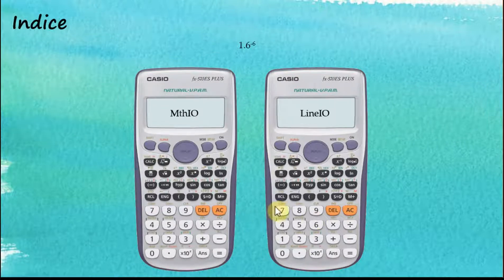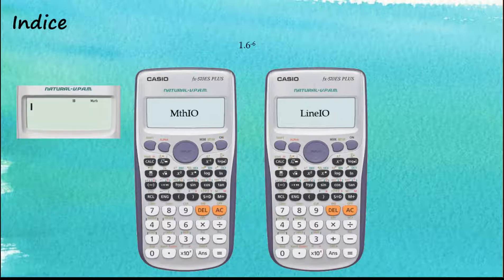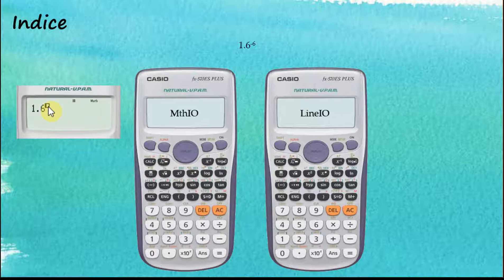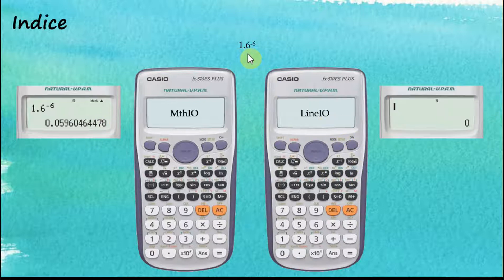Next, let's look at indices. For Math Input, we always start with the container, and the container for indices is this one. The cursor is in the base — the base is 1.6. Then we move to the next subcontainer, which is the index or exponent, and the index is negative six. Press equal to get the answer.